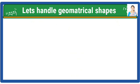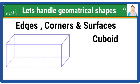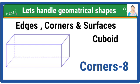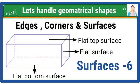Now let's understand the edges, corners, and surfaces. A cuboid has 12 edges, 8 corners, and 6 surfaces altogether. They all are flat surfaces.